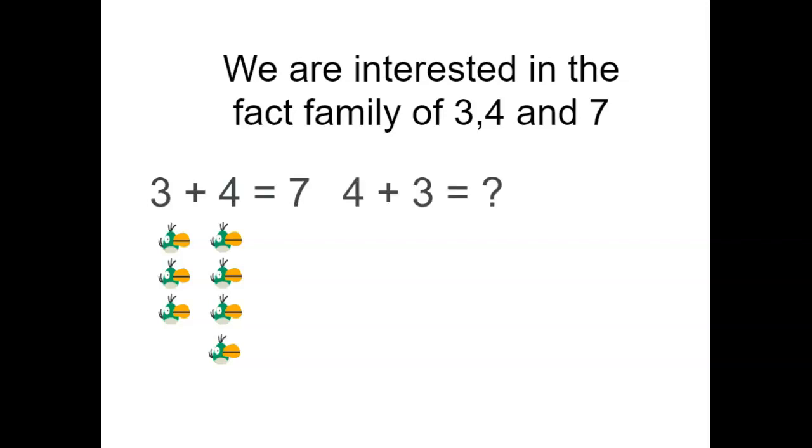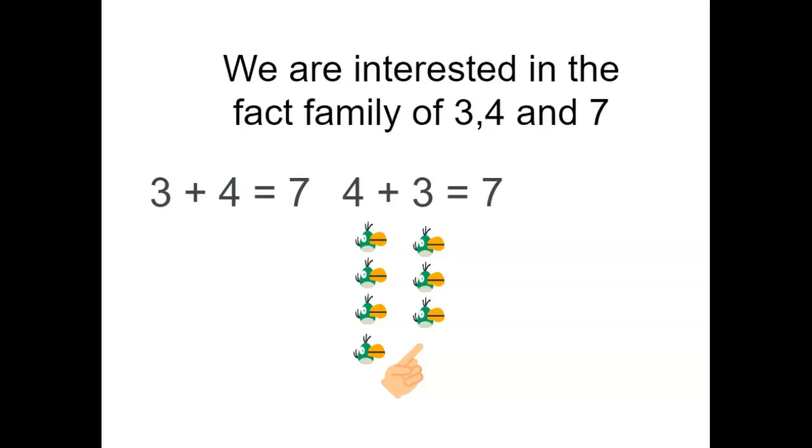How about the answer to 4 plus 3? Well, here's my group of 4 birds. Here's the group of 3. We still have 7 birds. So, 4 plus 3 equals 7.